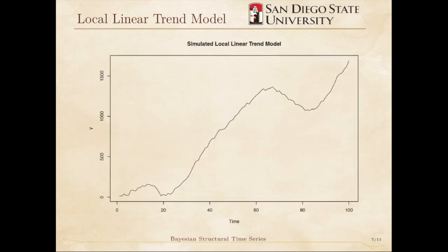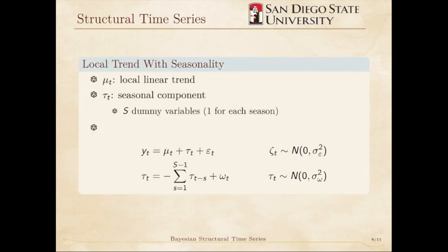The next thing we might want to add is a seasonal component. Here, we consider MuT to be the local linear trend model we just discussed. TauT is the seasonal component. We model TauT using dummy variables for each season. The model looks like this. Since we consider MuT to be a local linear trend model, there are actually four parameters here. One for the measurable noise that goes with YT, one for the level, one for the trend, and one for the seasonal component, TauT.